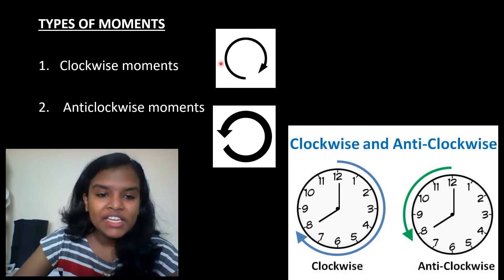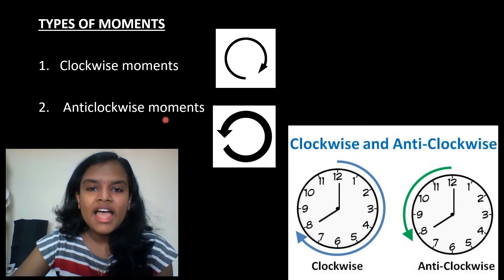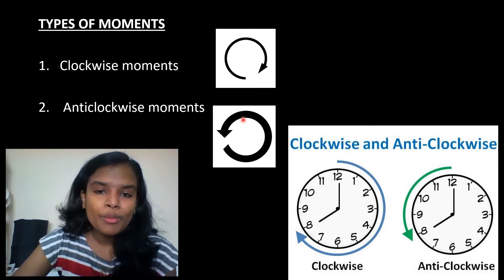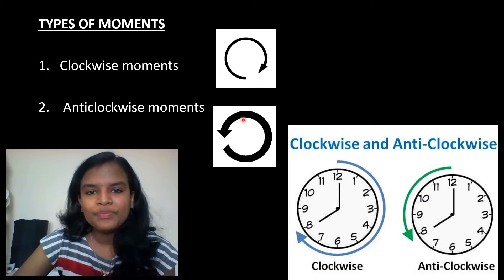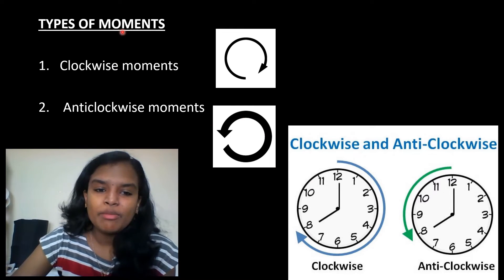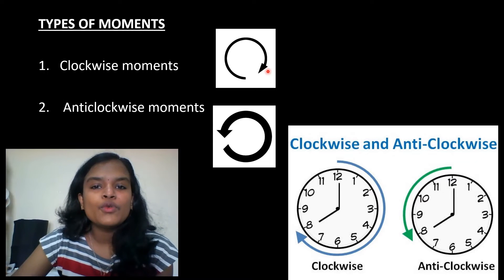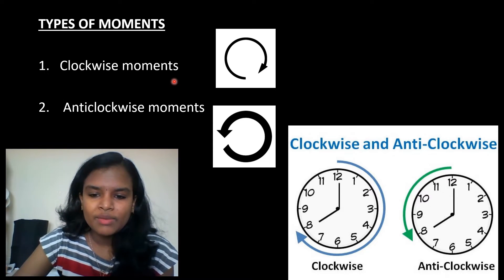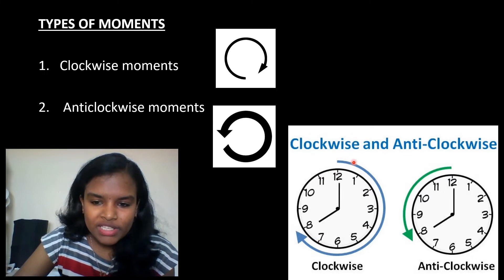The types of moment — the direction of the moment. The moment is the rotating effect or the turning effect. For direction, we classify the moment. A clockwise moment is when we rotate the force in the clockwise direction, like the direction of a clock needle.